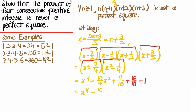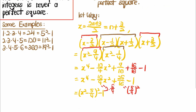We then get x⁴ - (10/4)x² + 25/16 - 1. Notice that 25/16 = (5/4)² and 10/4 = 2 × (5/4), so this builds on the fact that 9 + 16 = 25, the 3-4-5 Pythagorean triple. The whole expression becomes (x² - 5/4)² - 1.